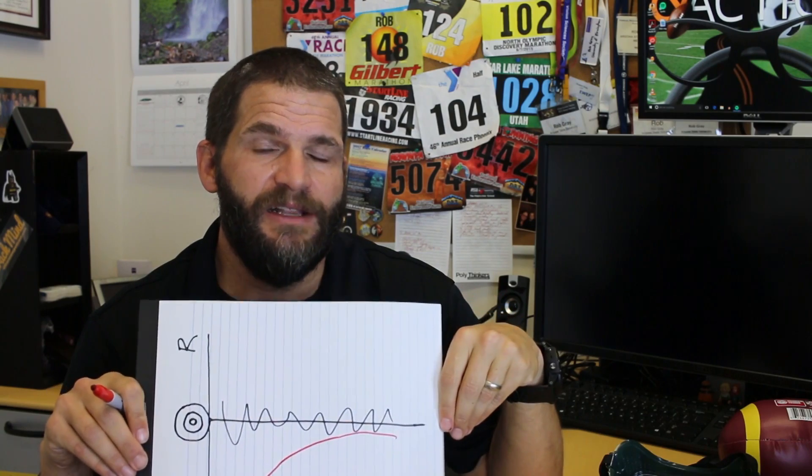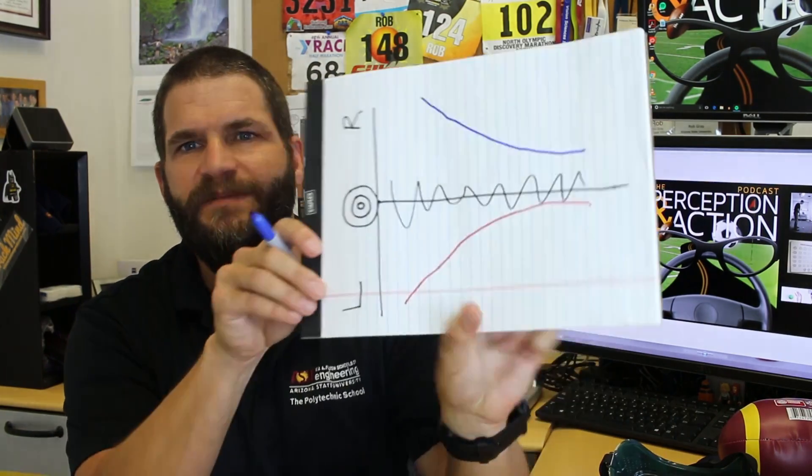With continued practice wearing the prisms, I get better and start hitting closer to the bullseye. If you do enough throws, you get back almost to normal performance. Then when you take the glasses off after adapting, that's the most fun part of the demo — because it's one thing to make people miss the board while wearing the glasses, but when you can get them to miss the dartboard completely while wearing nothing but their own eyes, it's quite convincing. When you take the glasses off, you miss to the other side — the opposite direction.